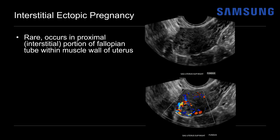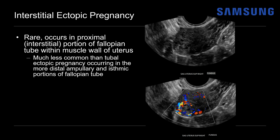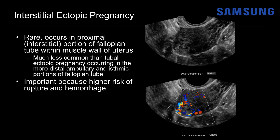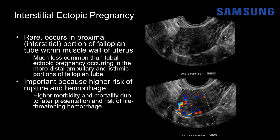This is consistent with an interstitial ectopic pregnancy — a rare type of ectopic that occurs in the proximal or interstitial portion of the fallopian tube, actually within the wall of the uterus. It's much less common than the typical tubal ectopic pregnancy that occurs in the distal, ampullary, and isthmic portions of the fallopian tube. These are important to identify because they have a higher risk of rupture and hemorrhage with higher morbidity and mortality due to later presentation and the risk of life-threatening hemorrhage, since they're in the muscle wall of the uterus — a rupture there is more significant.